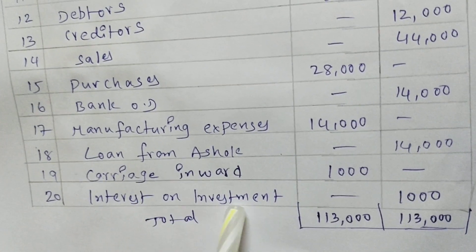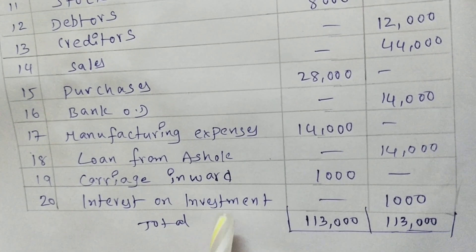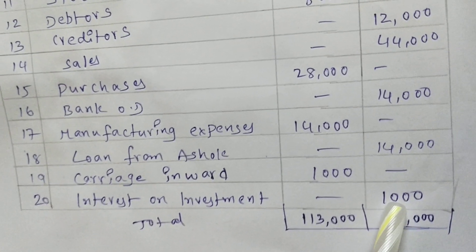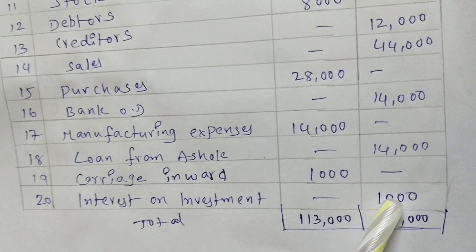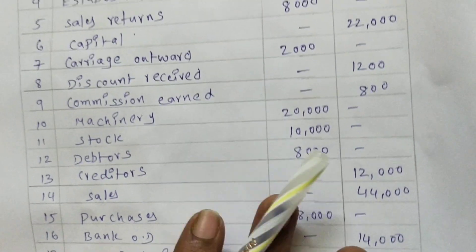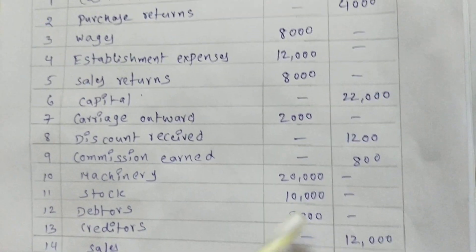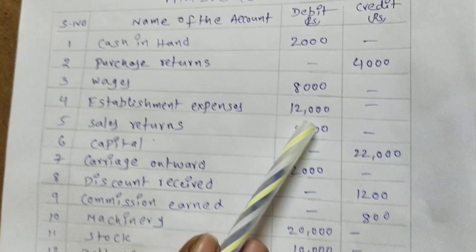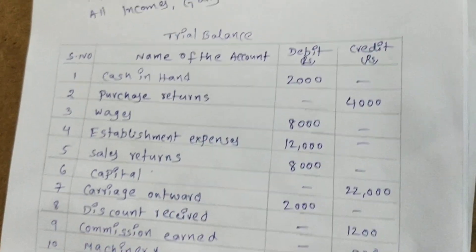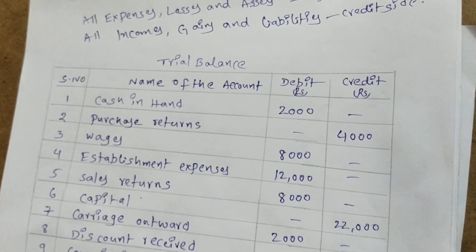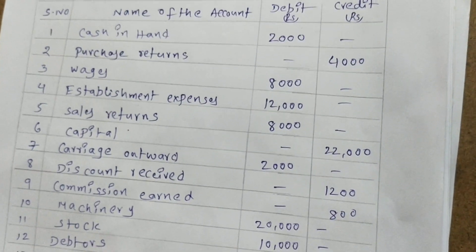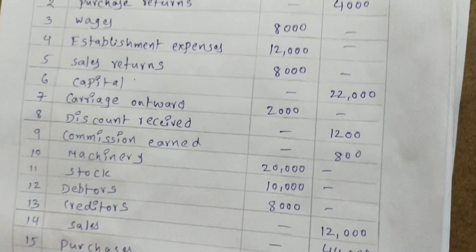Interest on investment — this is income, and all incomes we have to write on the credit side. So the simple rule is: all expenses, losses, and assets go on the debit side; all incomes, gains, and liabilities go on the credit side.